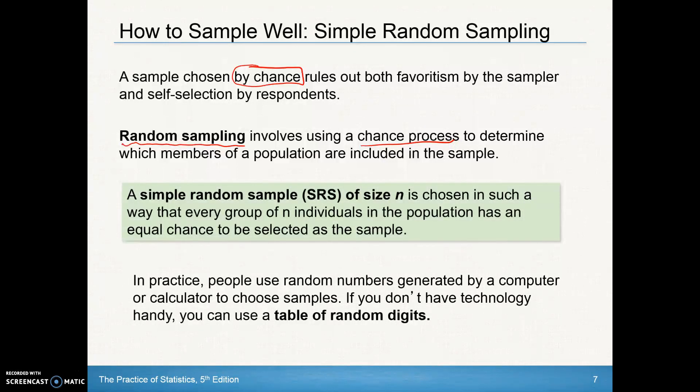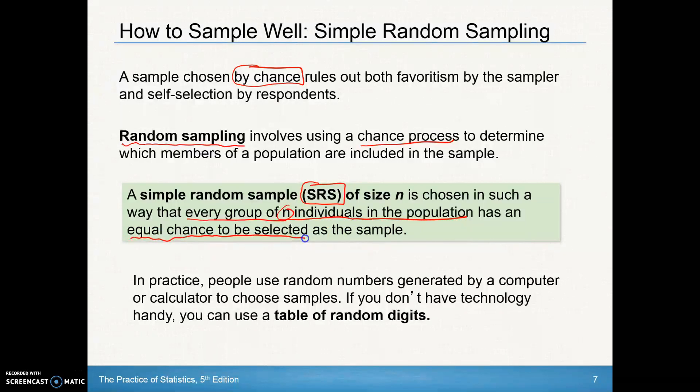So a simple random sample, we'll start abbreviating that as SRS, is chosen in such a way that every group of individuals in the population has an equal chance to be selected as a sample.